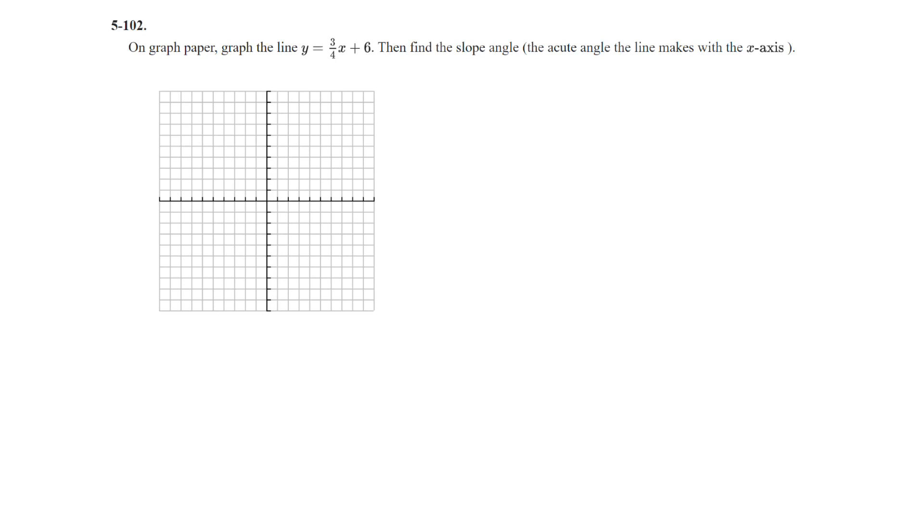Question 102, on graph paper, graph the line y equals 3/4 x plus 6, then find the slope angle, that's the acute angle the line makes with the x-axis. So let's go ahead and graph, we have a y-intercept at 0, 6, with a slope of 3/4, so we can go up 3 over 4. We can also go down 3 and to the left 4 units.